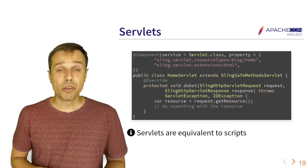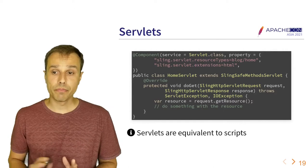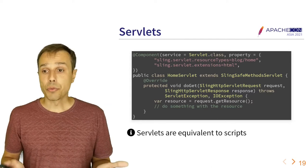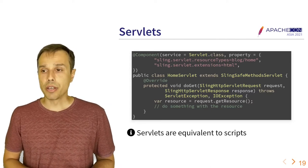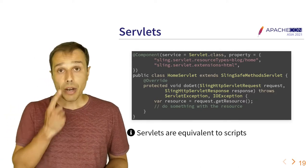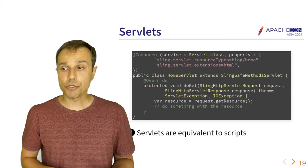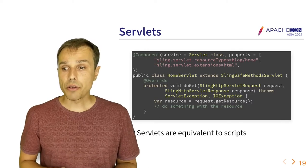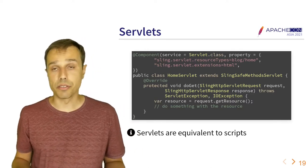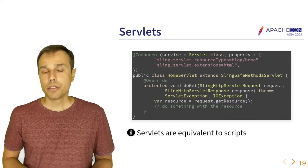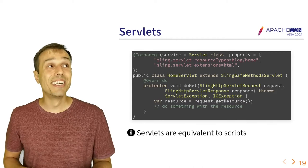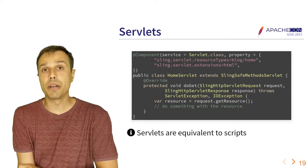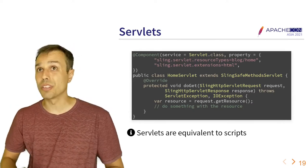The twin of scripts are servlets — they have the exact same power and are invoked exactly the same way by Sling, but written in Java or another JVM-based language. You define a servlet with annotations specifying the extensions and resource types to handle, then implement a doGet method. Scripts are well-suited for rendering HTML, while servlets are better for processing POST requests or rendering JSON or other formats.